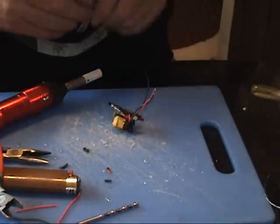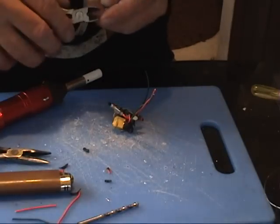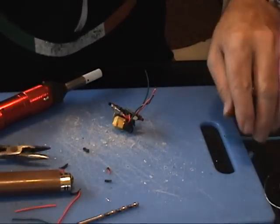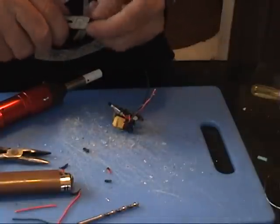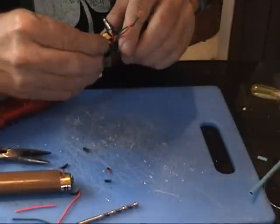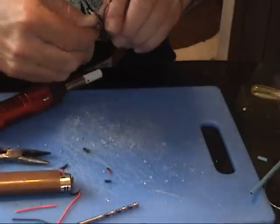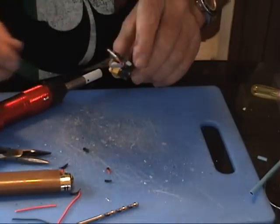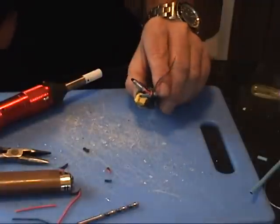Now back to the heat shrink. Take yourself a nice piece of heat shrink. I want one a little bit longer than that. Slide it over those three that you just soldered together and heat shrink that mess.